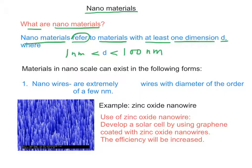A material in nanoscale can exist in the following forms. First, nanowires. Nanowires are extremely thin wires with diameter of the order of a few nanometers.